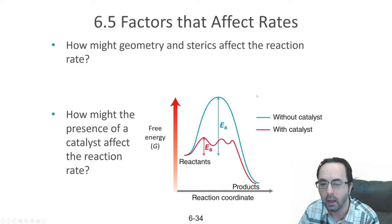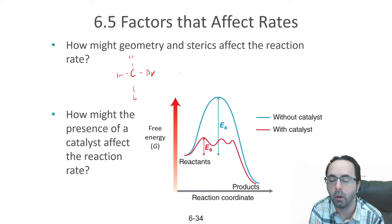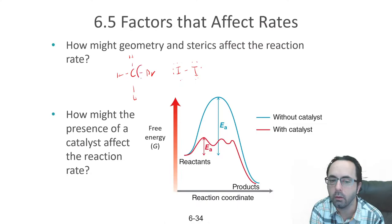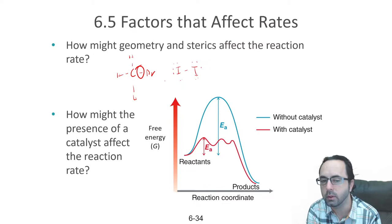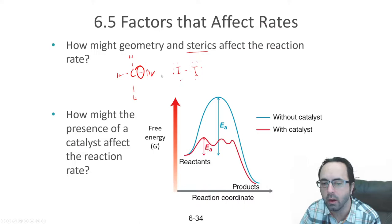How might geometry and sterics affect the reaction? If we have a molecule with bromine and hydrogen, and we want it to react with iodine, the iodine can collide in any way to make the reaction occur. But for the other molecule, the collision must occur from one specific side in order to break the carbon-bromine bond. The geometry and sterics can affect the probability that a collision will result in a reaction. If the bond that needs to break is surrounded and protected, that can make the reaction go a lot slower.